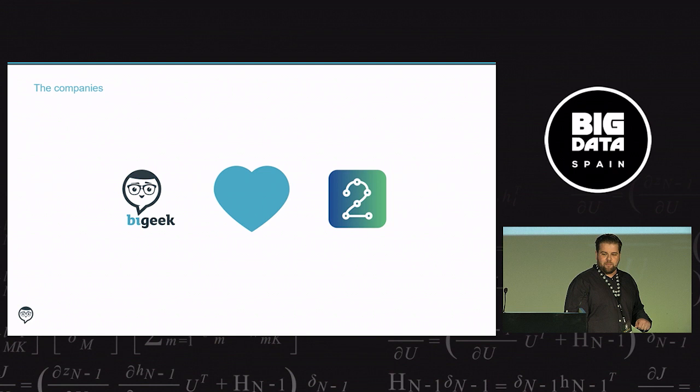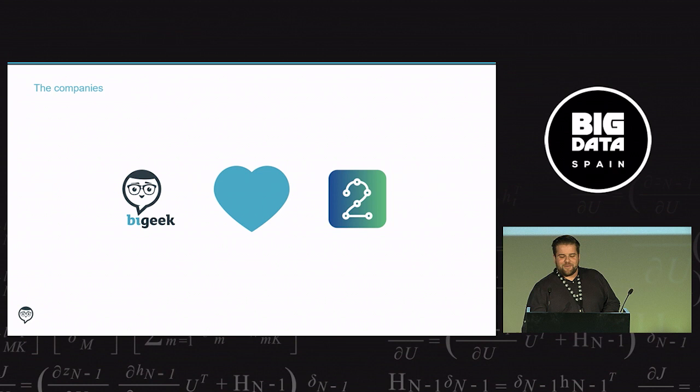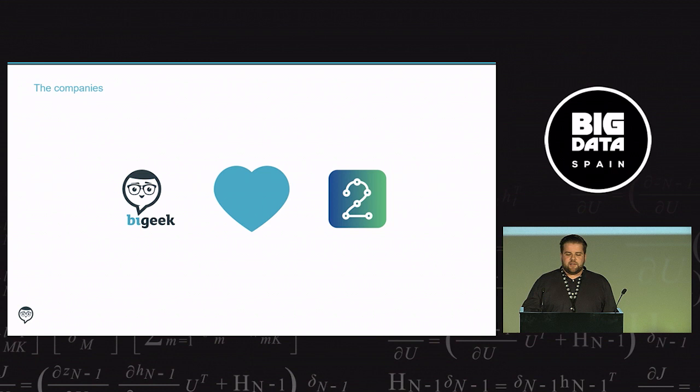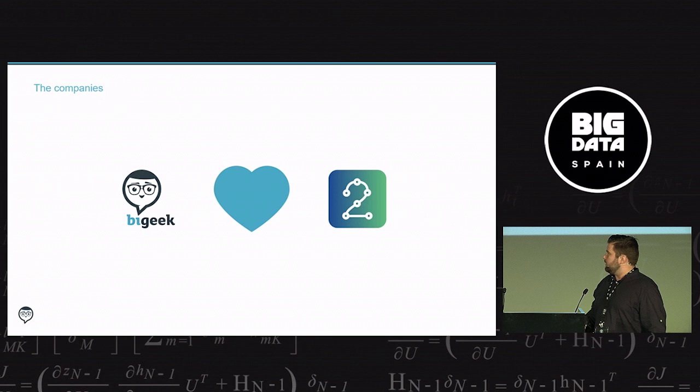The companies. BI Geek is a company created in 2015 by a group of professional experts in business intelligence. We offer service in business analysis, solution design, BI and big data. If you are more interested in the work of BI Geek, we have a stand outside and we are happy to answer any questions. And BI Geek is a partner, but what is Together Bank? This video will explain it better than me. And it doesn't work.